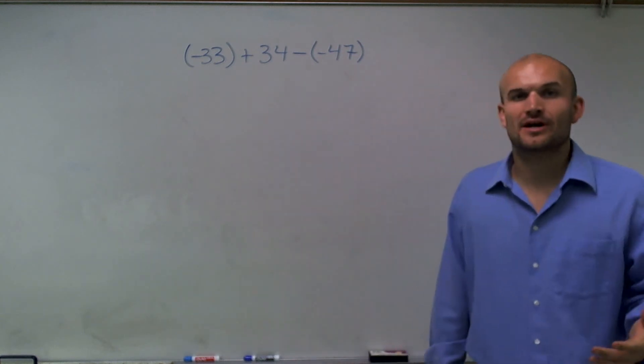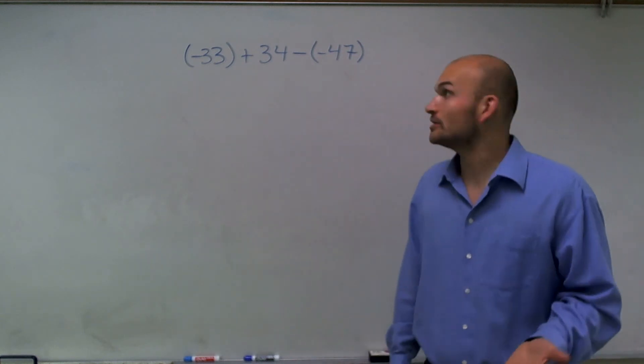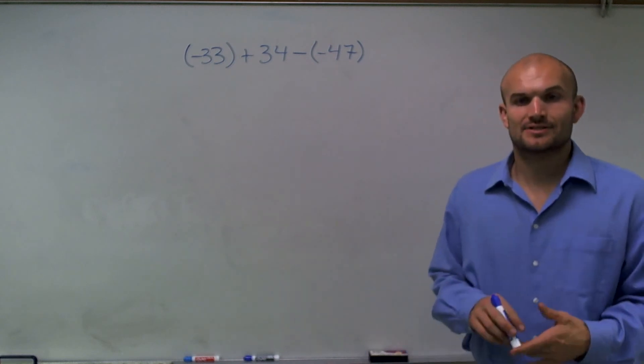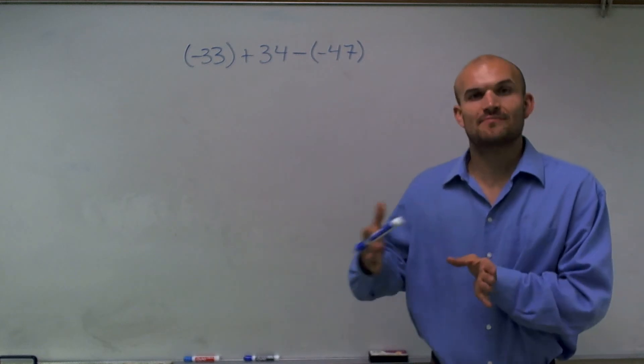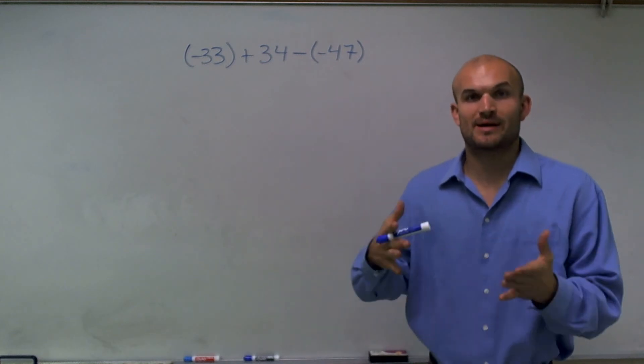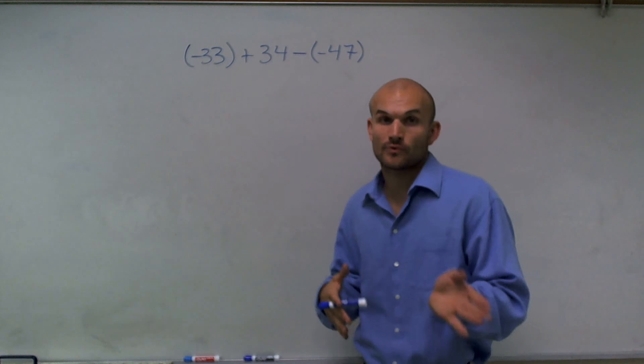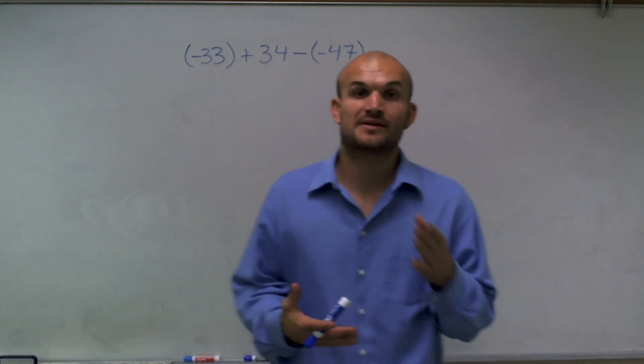So the first thing we need to understand about, at least when we're dealing with subtraction, is that subtraction is not commutative, meaning we can't subtract one number. Like we can't say 5 minus 3 is the same thing as 3 minus 5. Like we can say 3 plus 5 is the same thing as 5 plus 3.